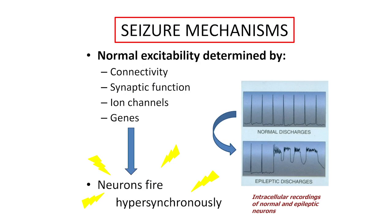This cartoon shows an example of one single neuron with an electrode in it in an animal, with nice even discharges firing off in a regular manner. When a seizure happens, those nice normal discharges become epileptic and hang up, last longer, and fire abnormally — that would be an example of abnormal firing.